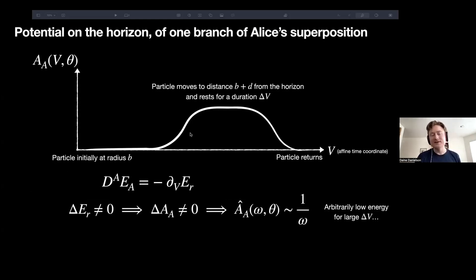So we have this time-changing Coulomb field that gives rise by Maxwell's equations to a change, a net change in the vector potential. And the Fourier transform of the vector potential kind of looks like a step function because it has this displacement by r plus D that then returns, which means that the Fourier transform will go like one over omega in frequency space, which means that there will be a number of soft photons produced that grows like the log of the affine time over which the superposition is created.